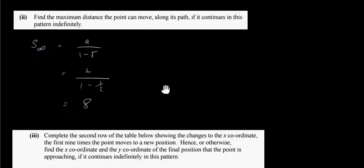The second stage is to find the maximum distance the point can move along its path if it continues in this pattern indefinitely. This is really the sum of the sequence to infinity, and the formula is a / (1 − r). That's simply 4 / (1 − 1/2) = 4 / (1/2) = 8. So the maximum distance is 8 units.